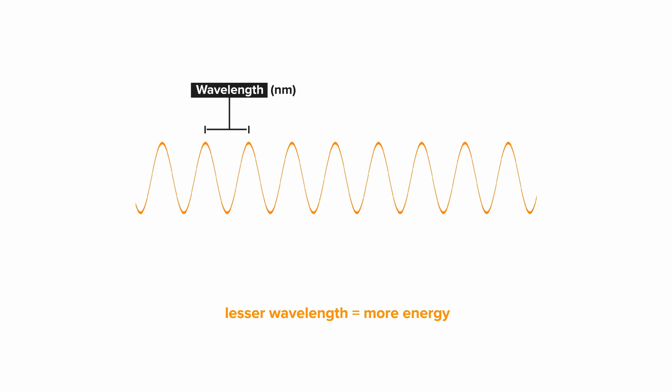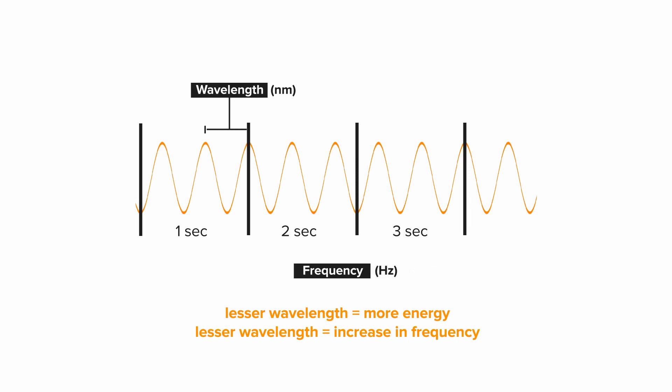But when the wavelength decreases, something else also happens. The frequency increases. This is the number of wave cycles per seconds measured in hertz. In this particular wave, the frequency is about 2.5 cycles per second. Both the wavelength and the frequency affect the energy of the photon.